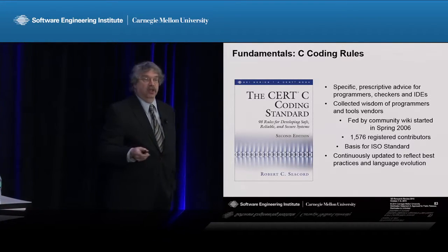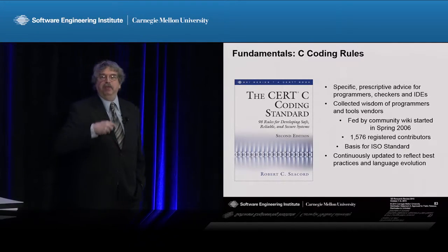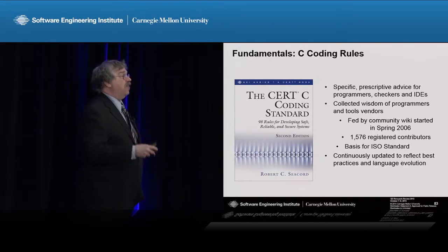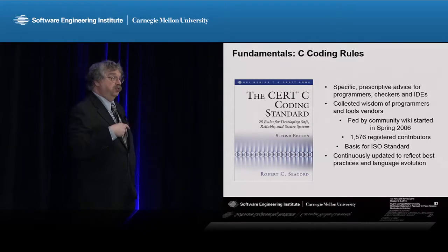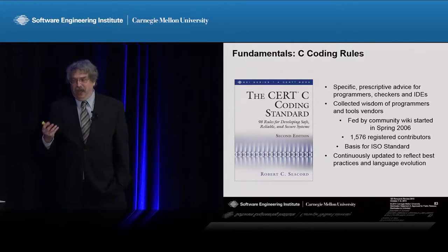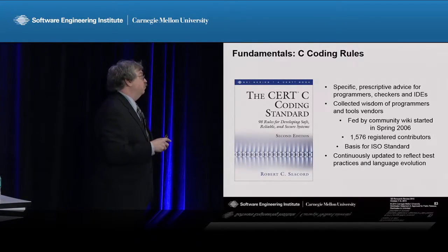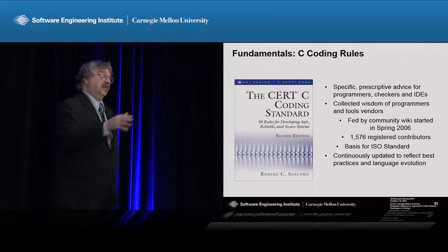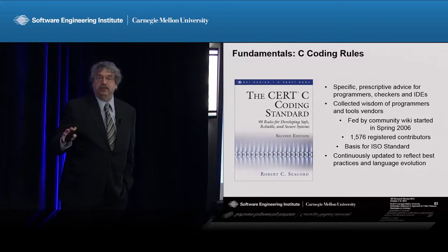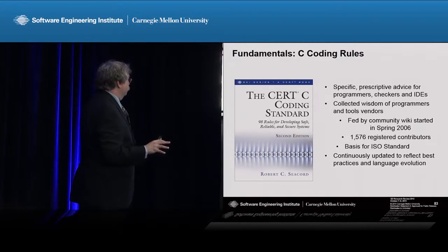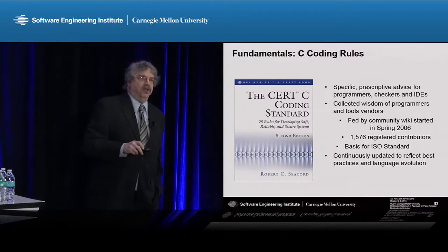Third, we engage the community. We have closer to 1,600 contributors and an open wiki where people can engage in discussions of these rules. It's a living document. A couple of years ago we published the second edition — the first edition was in the ISO standard. ISO standards are nice; you can put them into procurement documents. But ISO standards are sort of like astronomy: when you're looking at them, you're really looking at history. We put it through that process as well so it's more accessible, and we are continuously updating it.